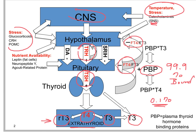Nutrient availability is key because the thyroid axis is constantly trying to balance the availability of nutrients with regard to its stimulation, so that it drives metabolism and oxygen consumption. We see a product made by fat cells: when animals have a significant amount of fat stores, leptin is high, and leptin has a positive effect on the axis. There are also other things related to appetite.